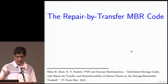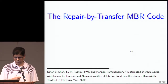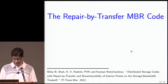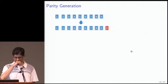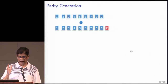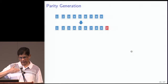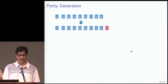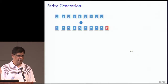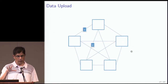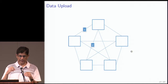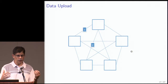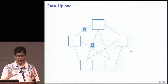The first is the repair-by-transfer MBR code, a result by Nihar and Rashmi. Suppose the file size is composed of nine symbols. Encoding proceeds in steps: first take the parity of these nine symbols — that's your 10th symbol. We're designing a distributed storage code for five nodes such that by connecting to any three nodes you recover the data, and you can repair a failed node. You have 10 coded symbols, and you start with the pentagon representing the five nodes, making it completely connected — five-choose-two edges gives 10 edges total.